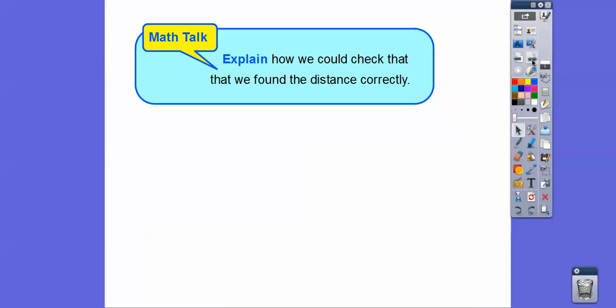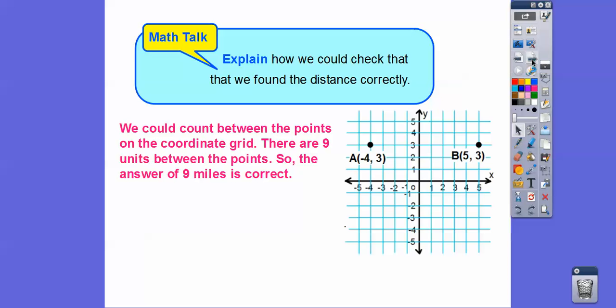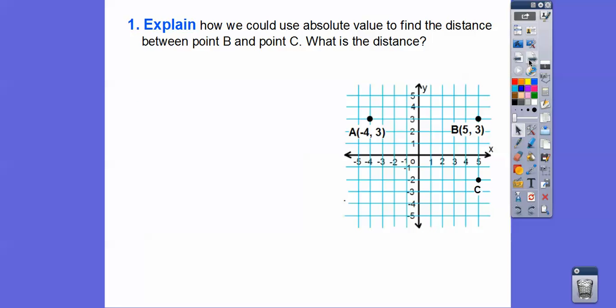To check that we found the distance correctly, we can just count the squares and find there are 9 squares going across. Each square represents 1 mile. Try to always answer the question in the context of the problem — it asked how many miles, so the answer is 9 miles. Don't just write 9, because you don't know if you're saying 9 pounds or 9 trees. In this case, it's 9 miles, so it's always good to answer with the proper units.